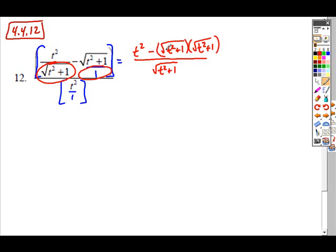And so if you square a square root, you're really just canceling that. So when you multiply these together, it's really going to simplify to just the t squared plus 1 in parentheses.